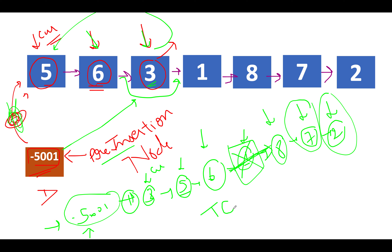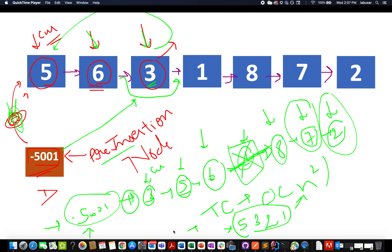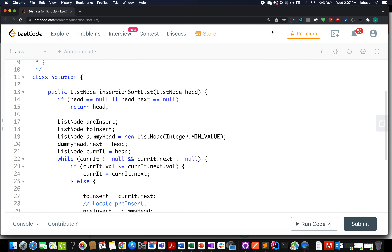The time complexity of this approach is O(n²). First, you identify the node that is out of sync across the entire list, and then for that node you reset from the dummy node and iterate up to that node to identify its correct position. This becomes evident if you consider a linked list with elements in reverse sorted order — the time complexity is clearly O(n²).